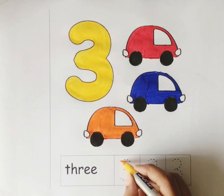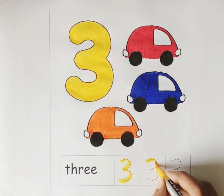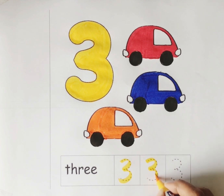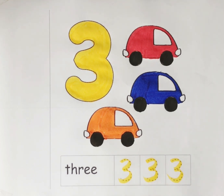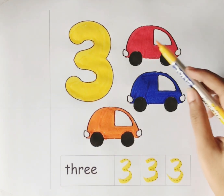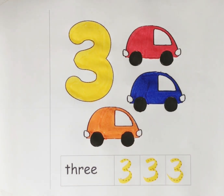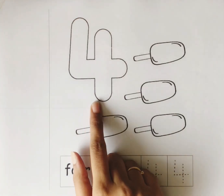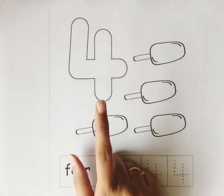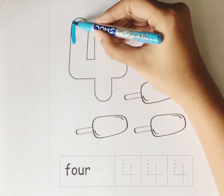Let's trace the number 3. Number 3. Let's count the total number of hearts: 1, 2, and 3. We have 3 hearts. Number 4. Let's color the number 4. Sky blue color.